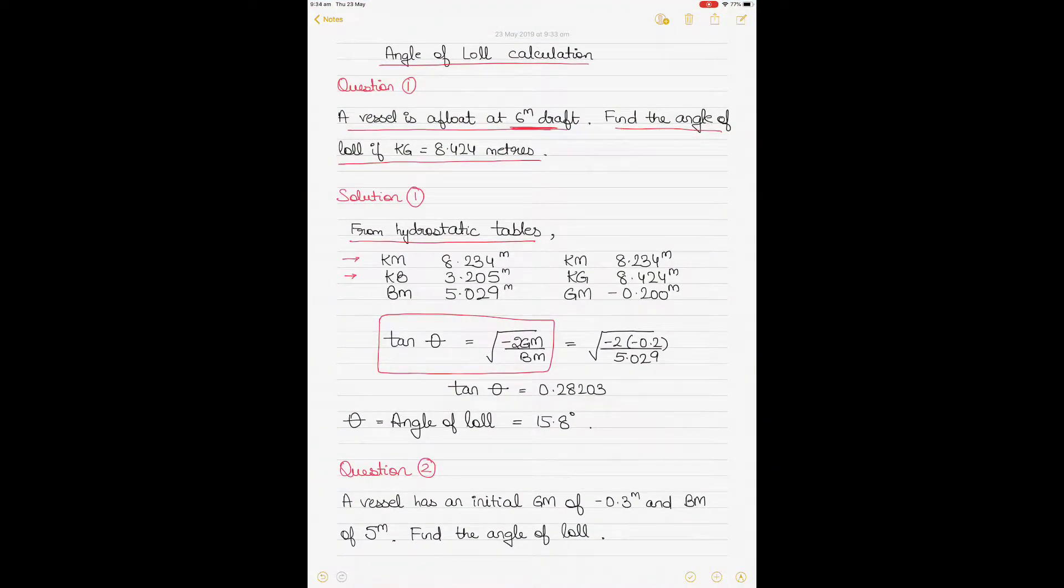So if I go back here, you can see that the KM value is 8.234 and KB value is 3.205. Now KM minus KB will give you the BM value, so the BM value is 5.029 meters.